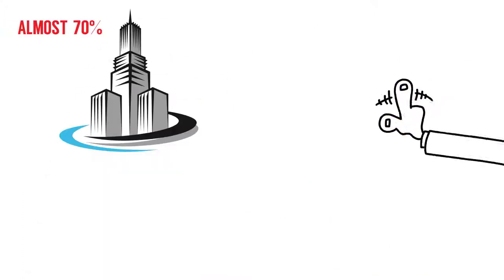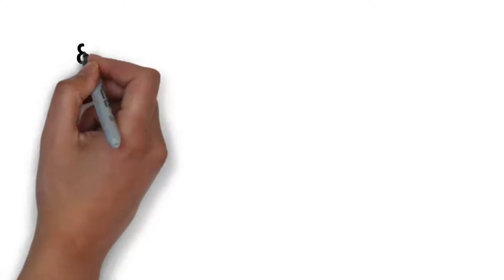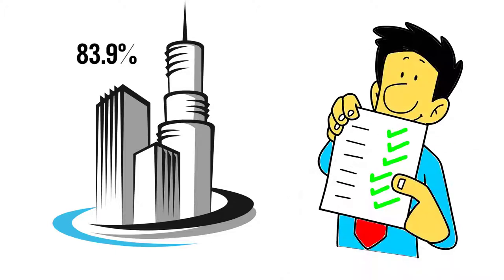Almost 70% of the analyzed sport organizations haven't published any documents from their management meetings, minutes or conclusions. 83.9% of overall analyzed sport organizations had published lists of their management and management boards.